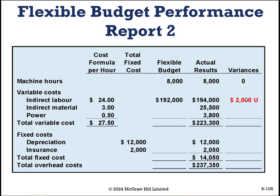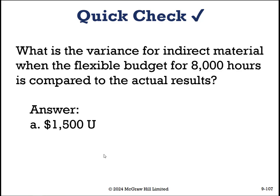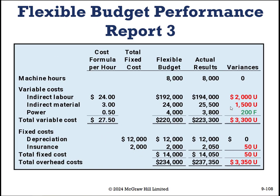Now do that for the next row — indirect material. Please pause the video. If you said A — $1,500 unfavorable — you would be correct. We calculate: 8,000 times $3 equals $24,000. That is unfavorable because we thought we'd hit $24,000 but actually incurred $25,500. So at the same production level, we incurred more expenses. Even if we had guessed the forecast correctly, we still would not have guessed correctly on the amount of cost we incurred.